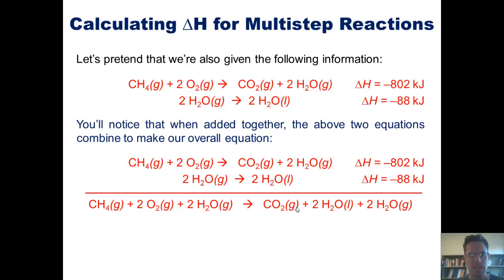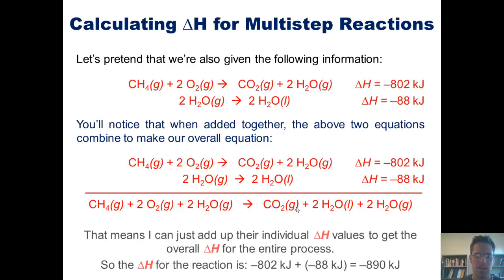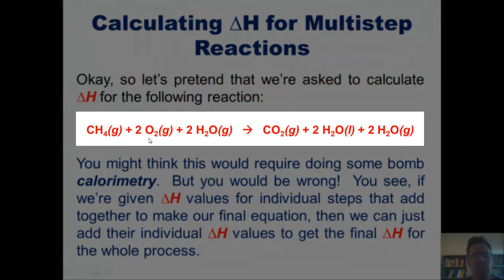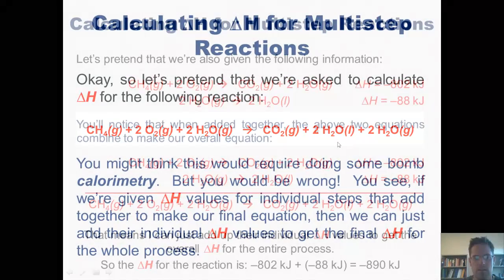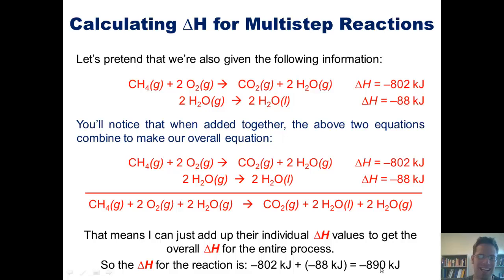Now, what in the world does that mean? What it means is that if we want to know the overall delta H for the entire original process we were asked, we can just add up the delta H values of each of these individual steps, negative 802 plus negative 88. Thus, the overall delta H for this original equation shown here is negative 890 kilojoules.